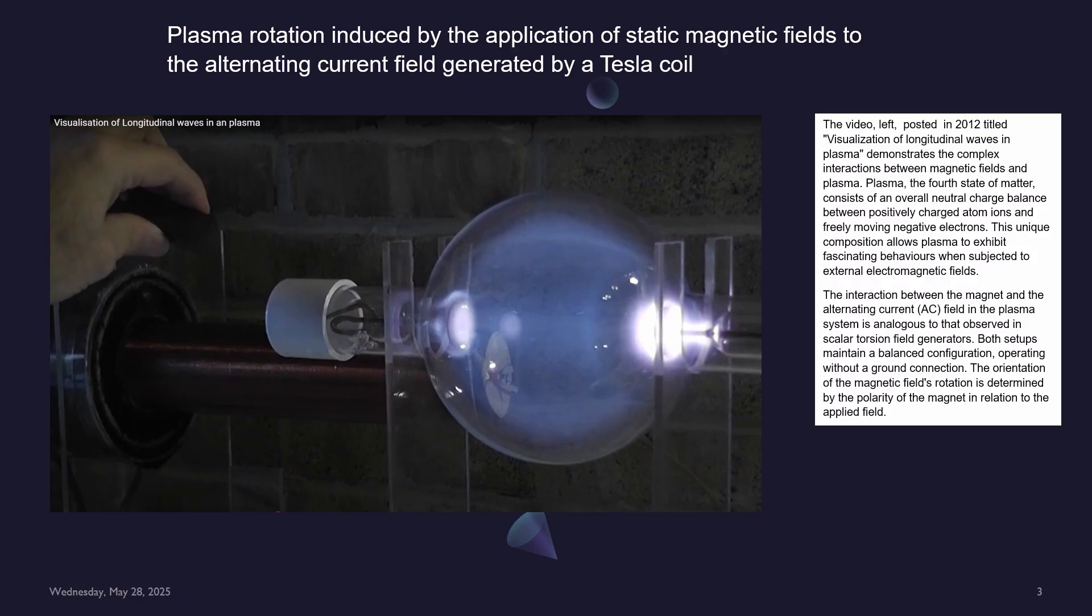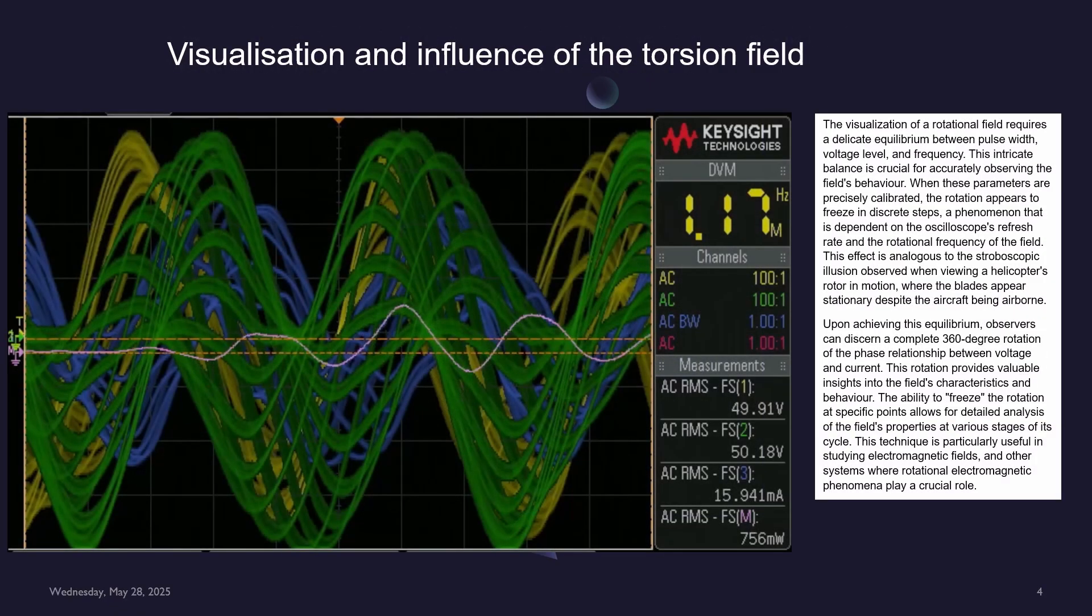The orientation of the magnetic field's rotation is determined by the polarity of the magnet in relation to the applied field. The visualization of a rotational field requires a delicate equilibrium between pulse width, voltage level, and frequency.